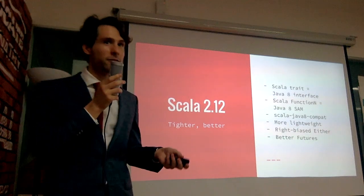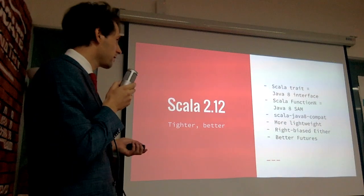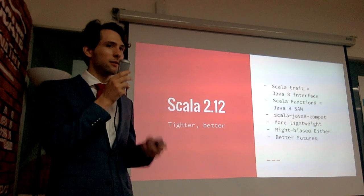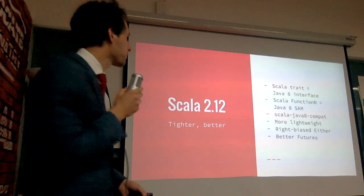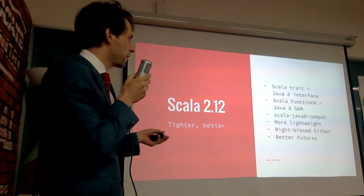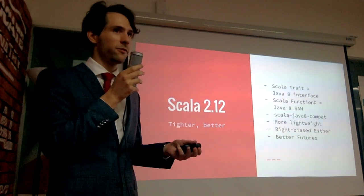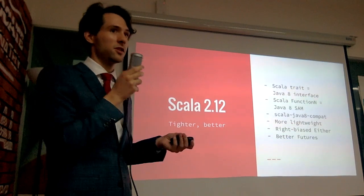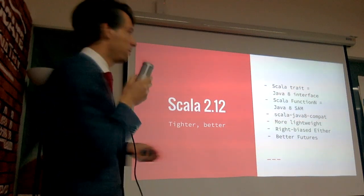Scala 2.12 was released very recently. It's been a very major thing for the Scala community because it's much more lightweight and makes use of all the features that Java 8 has to offer. In Scala 2.12, a Scala trait is now compiled into a Java 8 interface. This means code compiled from Scala is much smaller in bytecode size, potentially faster, and better optimized by the JVM.